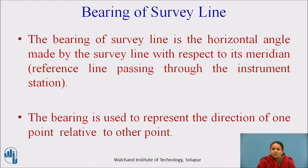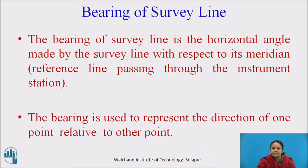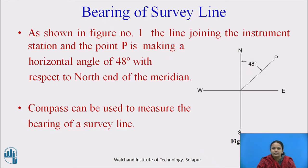The bearing of a survey line is the horizontal angle made by the survey line with respect to the meridian. Normally we will use the compass to measure the bearing of a survey line. The bearing is used to represent the direction of one point relative to another point.